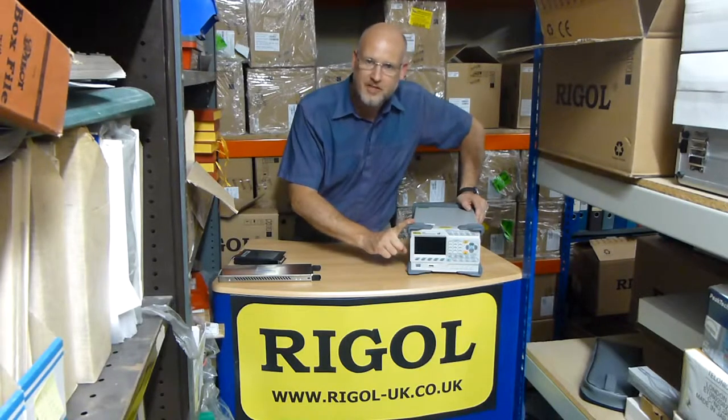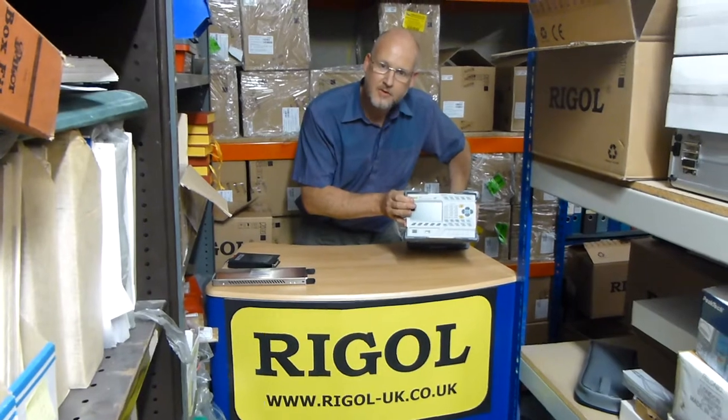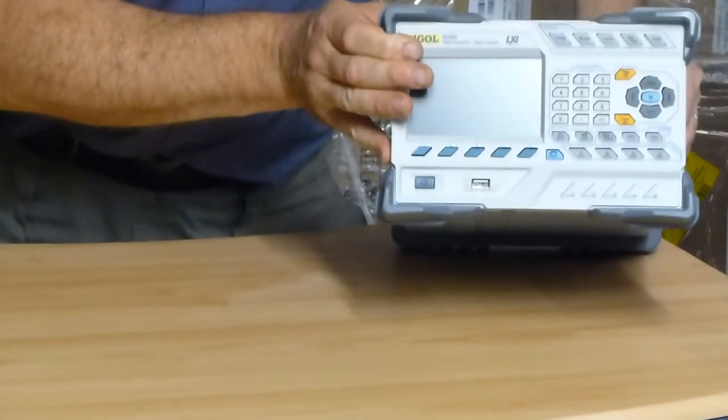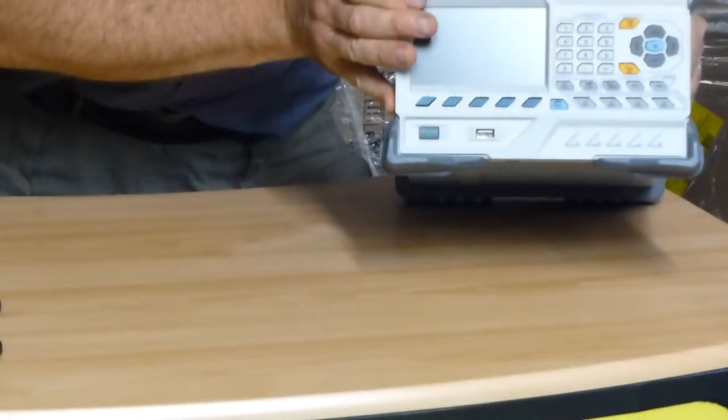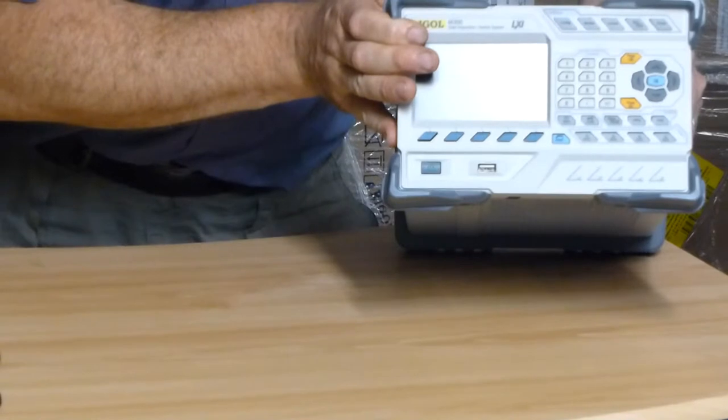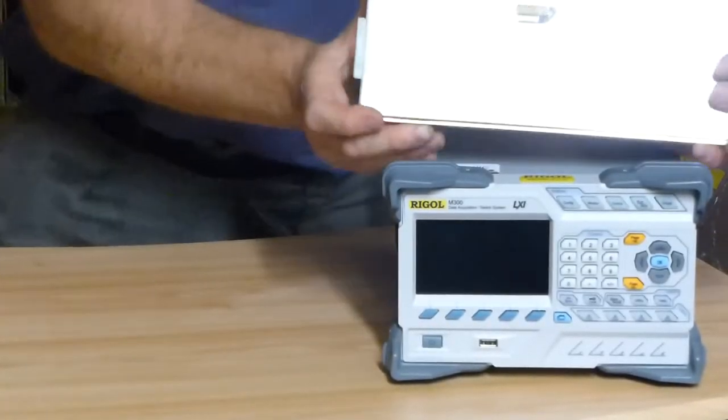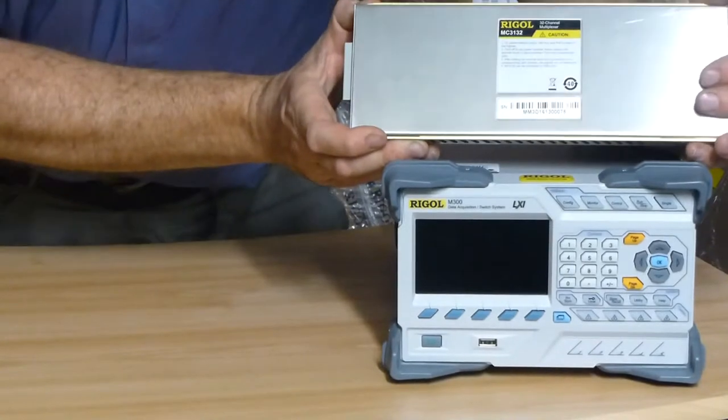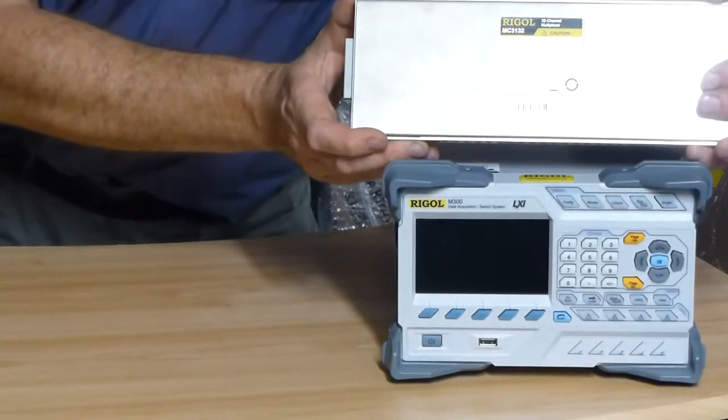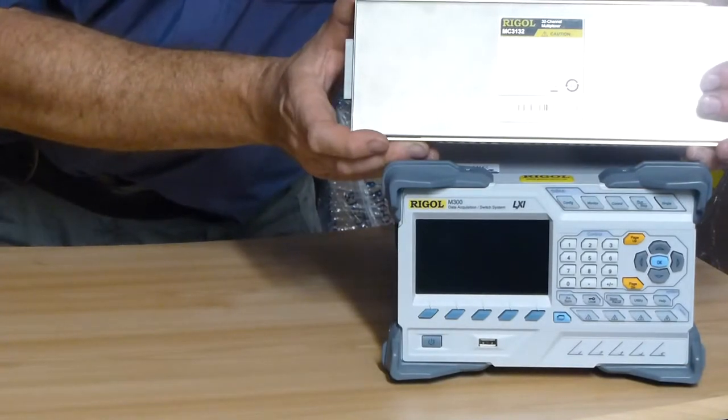I have a unit here fresh out of the box. I'm going to show you how easy it is to set up this instrument from scratch so you can see the configuration straight out of the box. We're going to do some measurements using a multiplexer card, and the multiplexer card I'm going to use is the MC3132 32-channel two-way multiplexer unit.